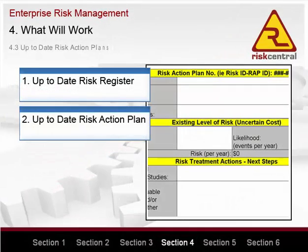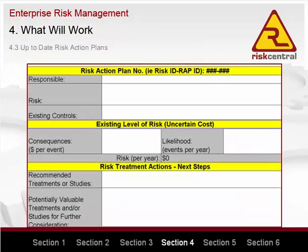Output 2: Risk action plans document the plans put in place to manage significant risks. The person responsible for each significant risk should be responsible for the production and maintenance of a risk action plan for that risk. The risk action plan for larger risks should include business cases or a cost-benefit analysis to select the most appropriate controls. This may also include an analysis to determine appropriate residual risk levels.